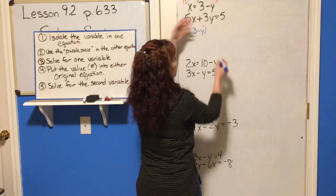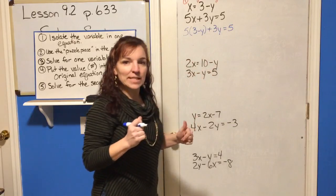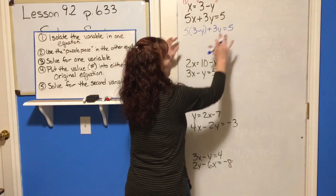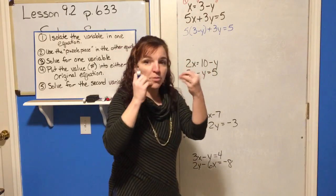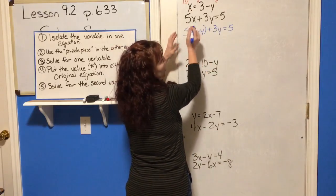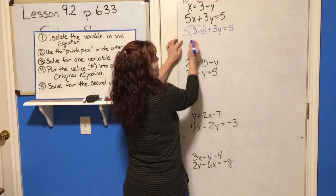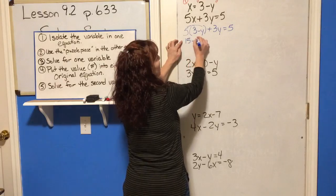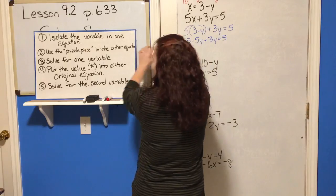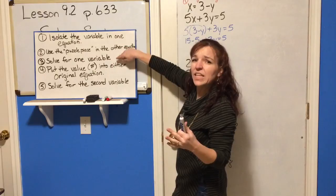The rest of the equation, since there are no other x's, stays the same. Once it's in there, ignore the rest for a minute and just work on this equation using your order of operations. In this one we're going to distribute the 5 through and get 15 minus 5y plus 3y equals 5.